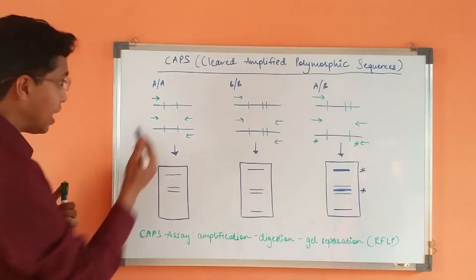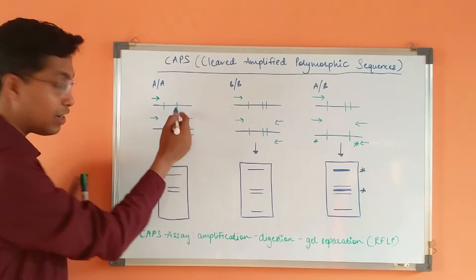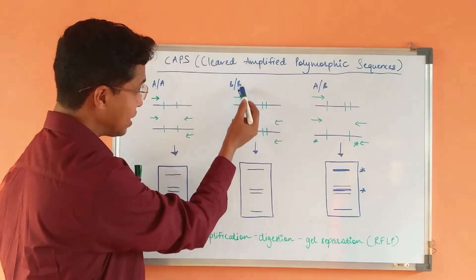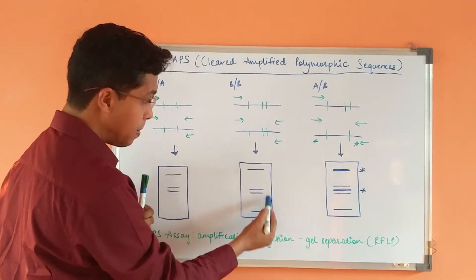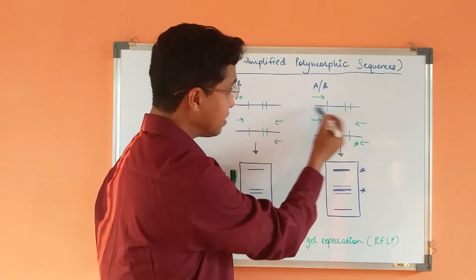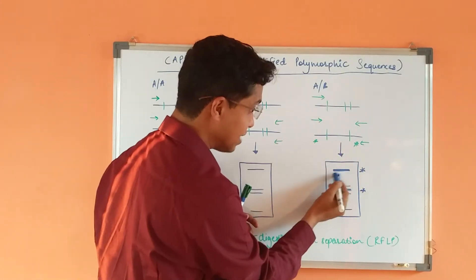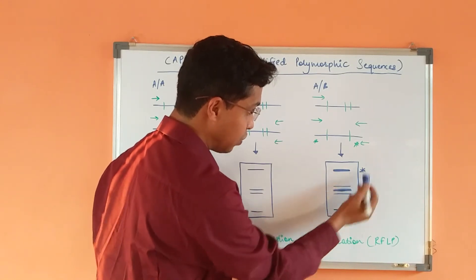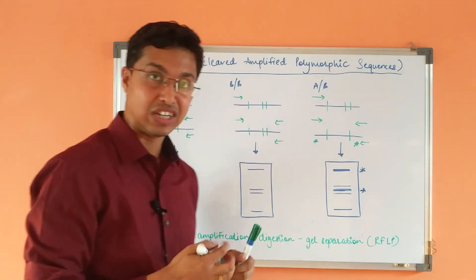Now consider the example — we have homozygous and heterozygous conditions. The restriction enzyme cuts at two sides here and you can see a band pattern of three fragments in the homozygous condition. In a heterozygous condition, it cuts at three sides in one fragment and two sides in the other. The band pattern differs — you can see bands with more intensity marked with a star, which appear in this kind of pattern when the heterozygous condition is present.